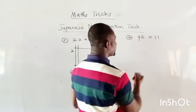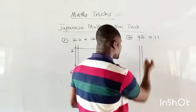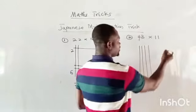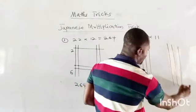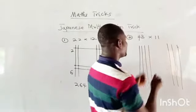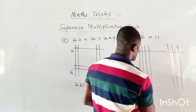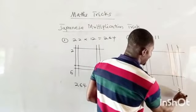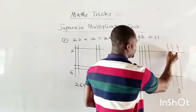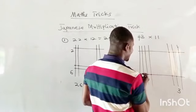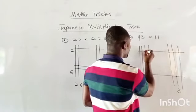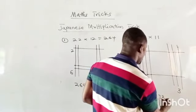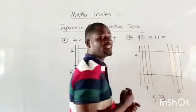Now number two: 43 times 11, done the same way. The first number is 4, so we draw four lines close together. Then the second number is 3, so we draw three lines. We come to the second set of numbers — one at the top and one at the bottom. We count: one, two, three — we have three here — then one, two, three, four, five, six, seven — we have seven here — and one, two, three, four.